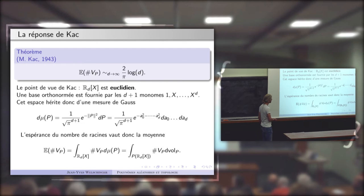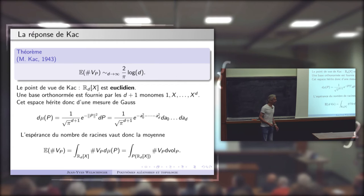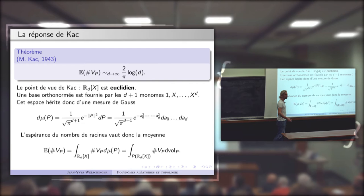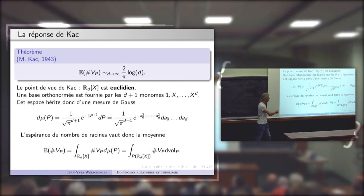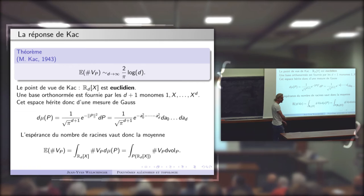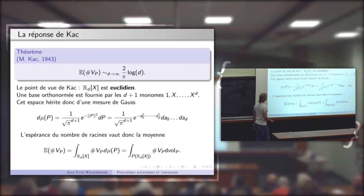Un probabiliste considère l'espace vectoriel avec la mesure de Gauss. Dès qu'on commence à travailler, on a envie de lui donner raison, parce que c'est beaucoup plus pratique de travailler avec un espace vectoriel qu'un espace projectif, d'autant plus quand on a une mesure produit. Et de toute façon, il est très facile de voir que tout est égal.